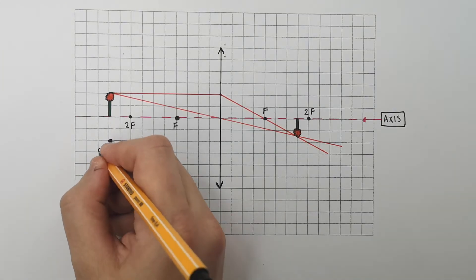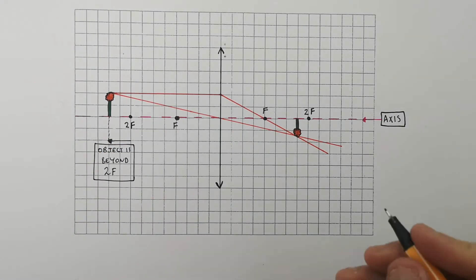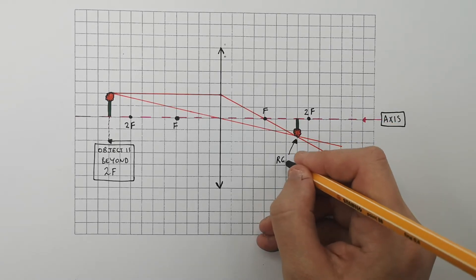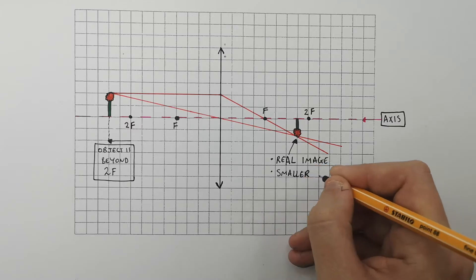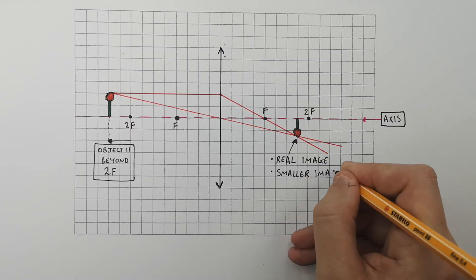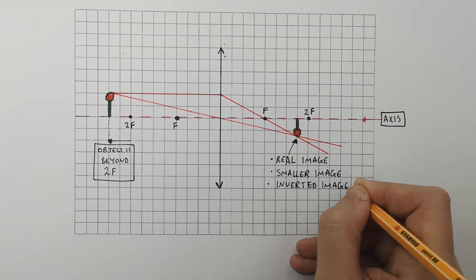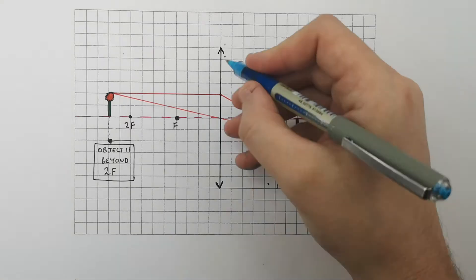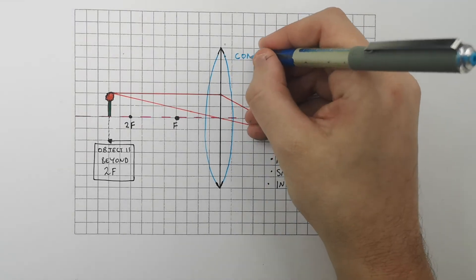So an object that is beyond the near side 2f produces a real image. The image is smaller than the object, it's an inverted image, and the image is between f and 2f on the far side. Remember, this image is caused by a convex lens.